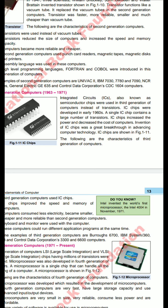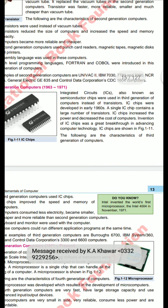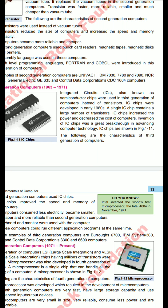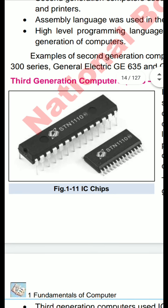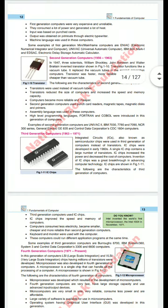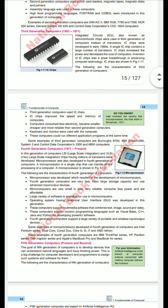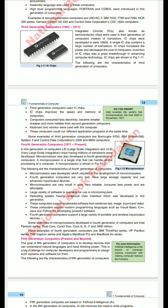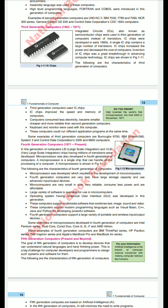A single IC chip consists of a large number of transistors. The IC chip increased the power and decreased the cost of the computer — its invention was a great breakthrough in computer technology. Each IC contains its own identifying number. Third generation computers used IC chips, which improved speed and memory. Computers consumed less electricity, became smaller, cheaper, and more reliable. Keyboards and monitors were used with this computer.